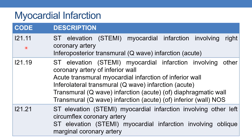The next is I21.11 — ST elevation myocardial infarction involving right coronary artery. When the physician documents inferoposterior transmural infarction, you can also code I21.11.